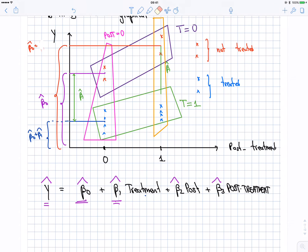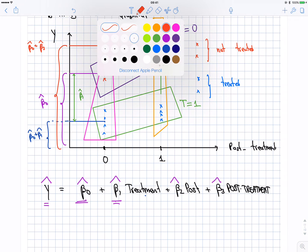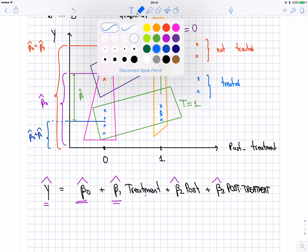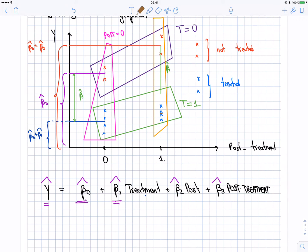So this will be beta zero hat plus beta one hat. Sorry, beta one is not there because they're not treated. But it's post, so it's going to be beta two hat. What about the average of this final group here? Remember we had four subgroups, so we have an average of this four people here. Let me do it with a different color, so I'm running a bit out of colors. Let's say that this height here now is simply beta one hat plus beta two hat plus beta three hat, and I forgot the beta zero hat.